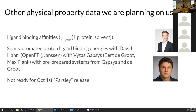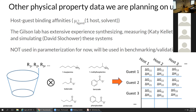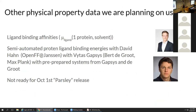Ligand binding affinities fit into this scheme — it's just the chemical potential of a ligand with one host and whatever solvent system you have. Protein-ligand binding affinities are the chemical potential of a ligand in a system with one protein and solvent. We're in the process of setting up semi-automated protein-ligand binding free energy calculations with pre-prepared systems, led mostly by David Hahn and Vitas Gatsis. This will not be ready for the October 1st release but should be going soon after.